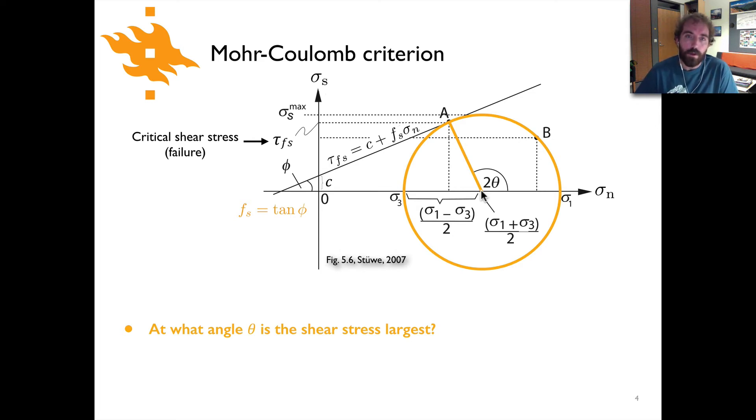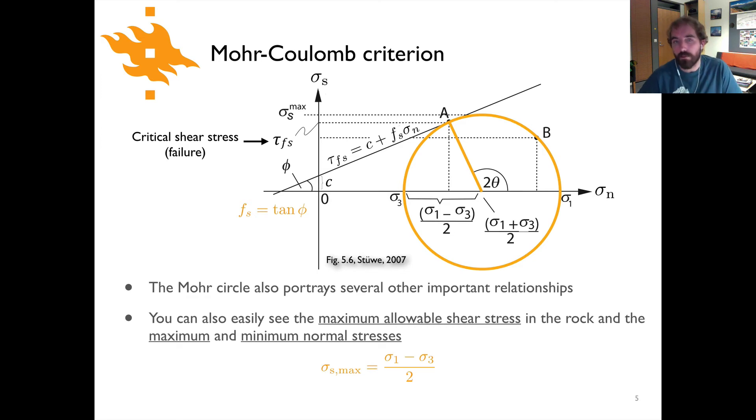Now that's actually an interesting number, this theta equals 45 degrees, because as it turns out we expect shear zones or regions where shear stress concentrates in rock to form at an orientation of about 45 degrees to the principal stresses. So typically when you're squeezing rock from either side, you would expect to have a pair of shear zones that form at 45 degrees, or faults that form at 45 degrees to the maximum principal stress in a compression type stress state.